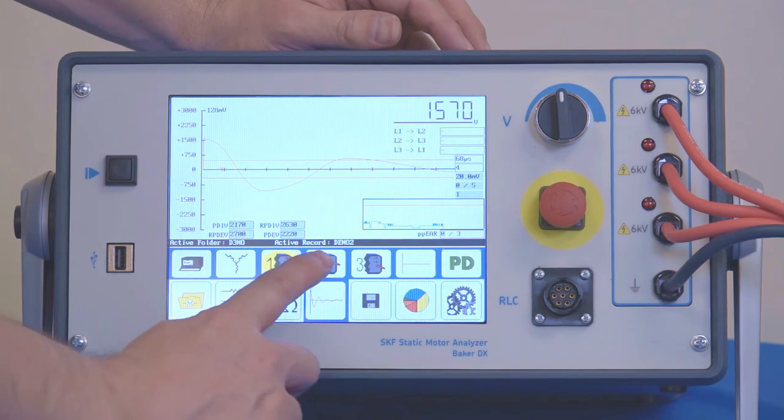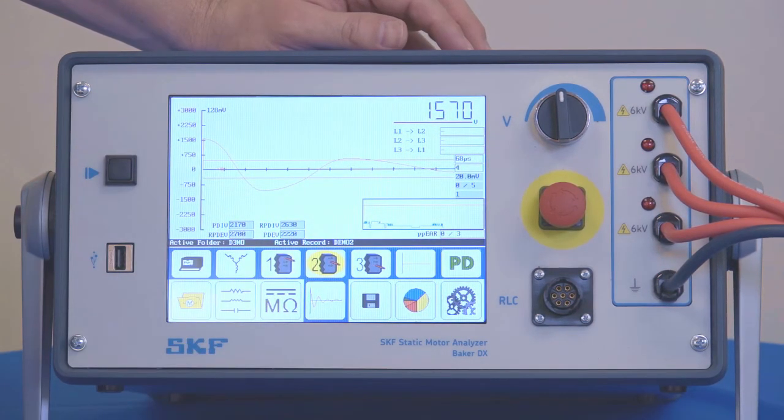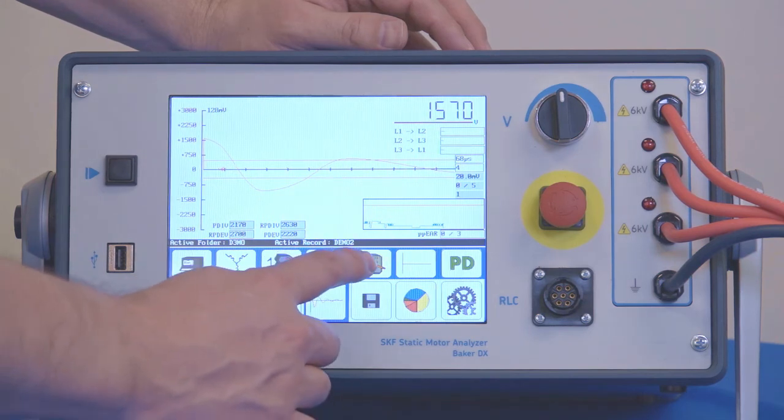Now we would proceed on to lead two. So I'll select lead two and then I would perform the test in exactly the same way. And that would do the same thing for lead three.